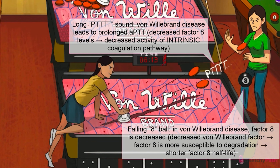To sum it up, less von Willebrand factor means less factor VIII, which leads to a dysfunctional intrinsic pathway, causing a prolonged APTT, embodied by that prolonged sound made by all those pucks bouncing around.